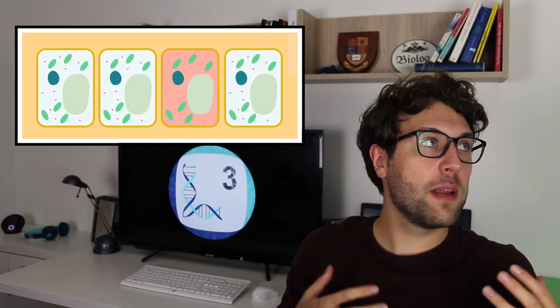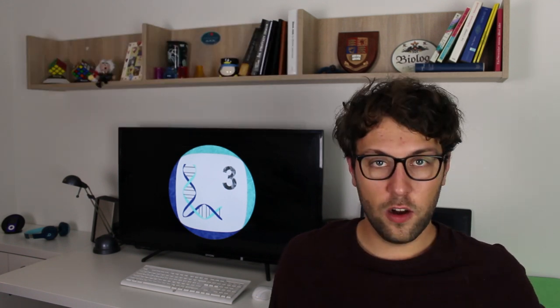In the aforementioned case of corn kernels, transposons jumped around in some cells. And in some cases they inserted themselves into DNA regions which are responsible for the colors of corn kernels. And since transposons can move differently in different cells, we get very colorful corn. Okay, so that's about different transposon classes.